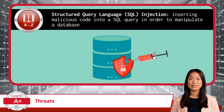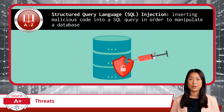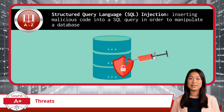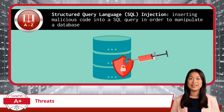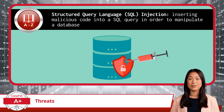Time to get a bit more technical with our next attack type: Structured Query Language, or SQL injection. In this type of attack, the hacker inserts malicious code into a SQL query in order to manipulate a database. Imagine you've got a login form where a user enters their username and password. Instead of entering valid credentials, the attacker might inject specially crafted code into the form's input fields. That code could trick the database into thinking it should bypass authentication altogether, allowing the hacker to gain unauthorized access to sensitive data. SQL injection attacks can be incredibly damaging because they target the core of a system — the data. Once inside, the attacker might be able to view, modify, or even delete critical information, and in some cases could gain complete control over the database.